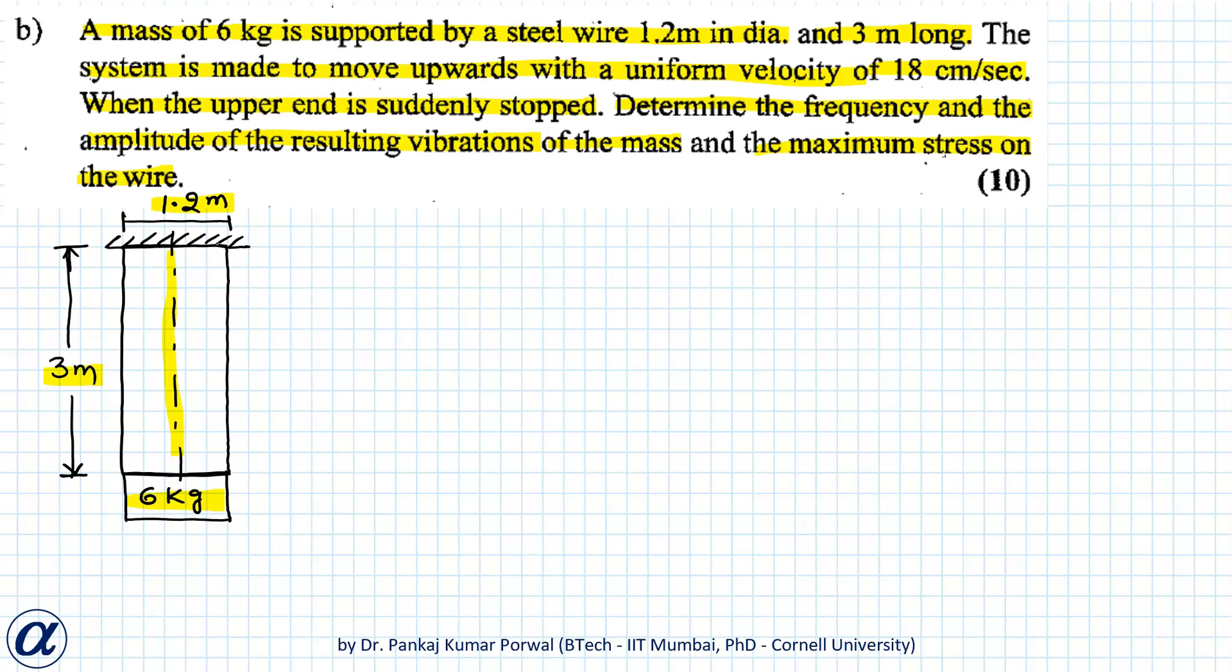So that will make the velocity of the upper end of the wire equals to 0 but rest of the wire and the block will keep moving in upward direction. So this will result in compression of this wire that will be similar to compression of a spring.